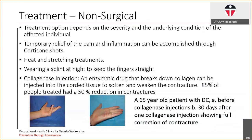With respect to treatments of Dupuytren's, there are basically two options. The first is non-surgical, where the treatment option depends on the severity of the underlying condition. You can get temporary relief of pain and inflammation through cortisone shots, heat and stretching treatments, or wearing a splint at night to keep the fingers straight. A relatively newer technique is a collagenase injection, where an enzymatic drug that breaks down the collagen is injected into the corded tissue to soften and weaken the contracture — and 85% of people treated this way had about a 50% reduction in their contracture within about 30 days.